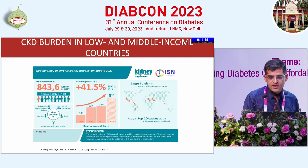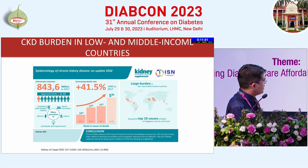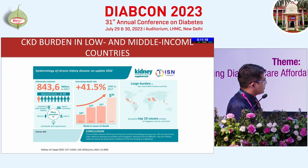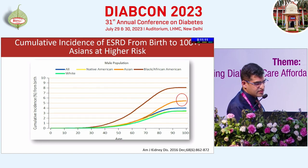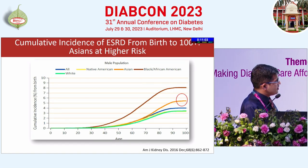Talking about CKD burden in low and middle income countries — there are about 843.6 million people with chronic kidney disease as of 2017. It is estimated that 1 in 10 persons among diabetics would have CKD. It will be more prevalent in individuals with poor glycemic control, racial minorities, the elderly, those with long-standing hypertension, and females. By 2040 it is believed to be the fifth largest cause of death. Asians are naturally predisposed to higher incidence of ESRD — Africans worst, then Asians, then other populations.